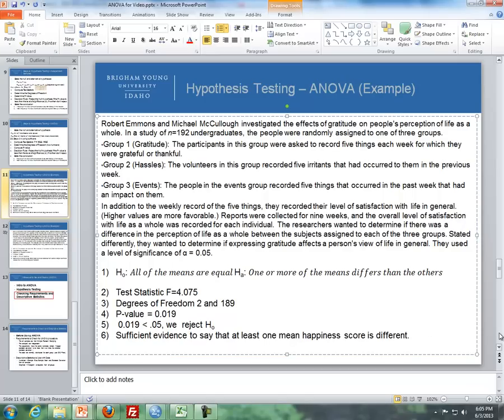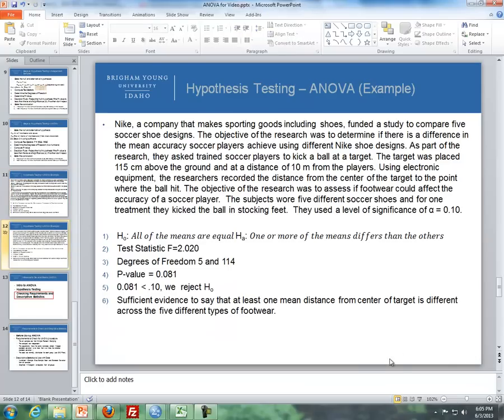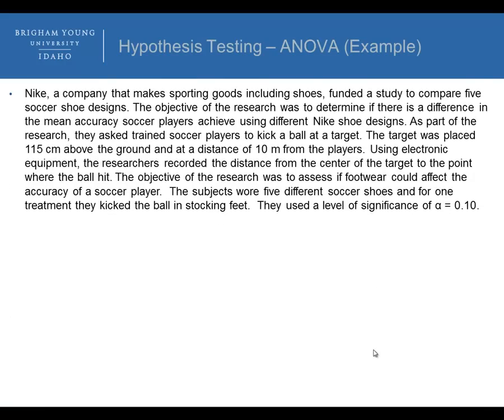So now here's the next example that's also found in the textbook. The Nike shoe company that makes sporting goods including shoes funded this study to compare five soccer shoe designs. The objective of the research was to determine if there is a difference in the main accuracy soccer players achieve using different Nike shoe designs. As part of the research, they asked training soccer players to kick the ball at a target. The target was placed 115 centimeters above the ground and at a distance of 10 meters from the players. Using electronic equipment, the researcher recorded the distance from the center of the target to the point where the ball hit.